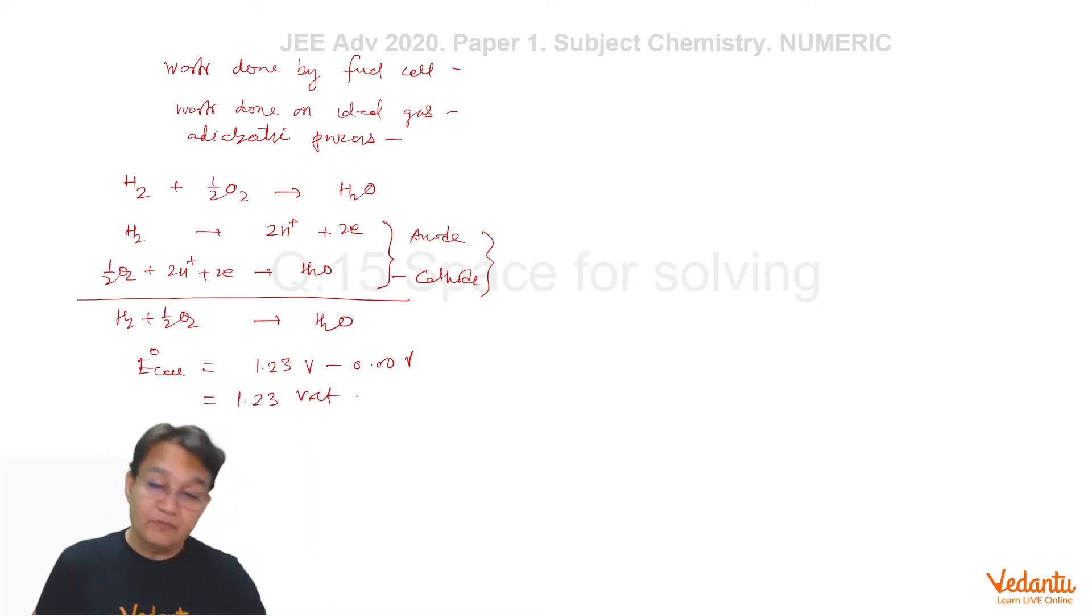So that means EMF of this cell is equal to 1.23 volt. So this means that work obtained from this is equal to nF into E° cell where n stands for the number of electrons involved in this reaction. From the balanced equation we can see n is equal to 2. So 1 mole of H2 gas if we consume, the work obtained will be 2 into 96500 into 1.23 and the units will be joules. This much of work will be obtained from this fuel cell provided 1 mole of H2 is consumed.